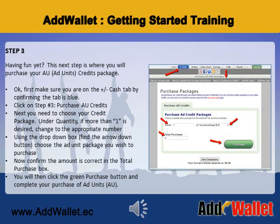Step 3: Having fun yet? This next step is where you will purchase your ad units credit package. First, make sure you are on the plus minus cash tab by confirming the tab is blue. Click on step number 3: Purchase AU Credits. Next, you need to choose your credit package. Under quantity, if more than one is desired, change to the appropriate number. Now using the drop-down box, find the arrow down button and choose the ad unit package you wish to purchase. Confirm the amount is correct in the total purchase box. You will then click the green purchase button and complete your purchase of ad units.